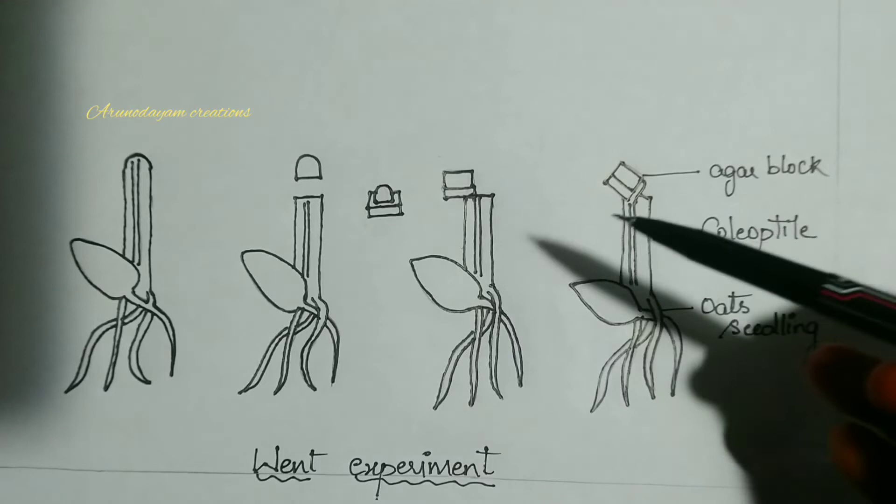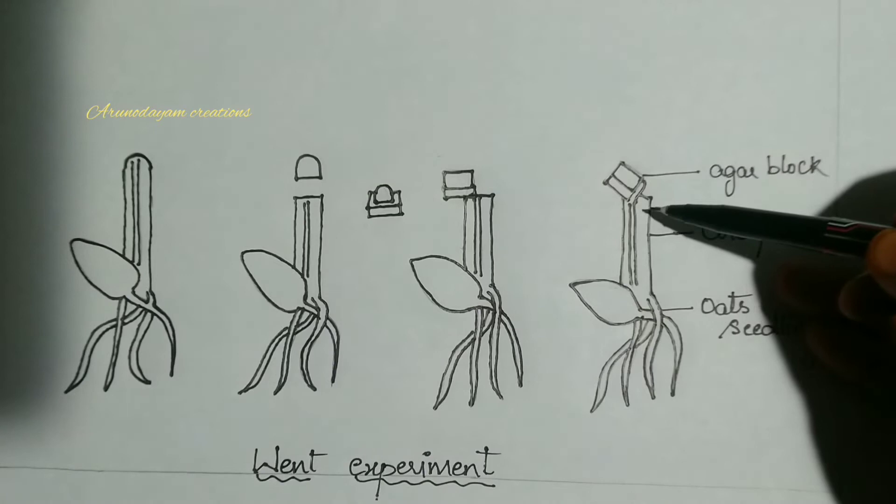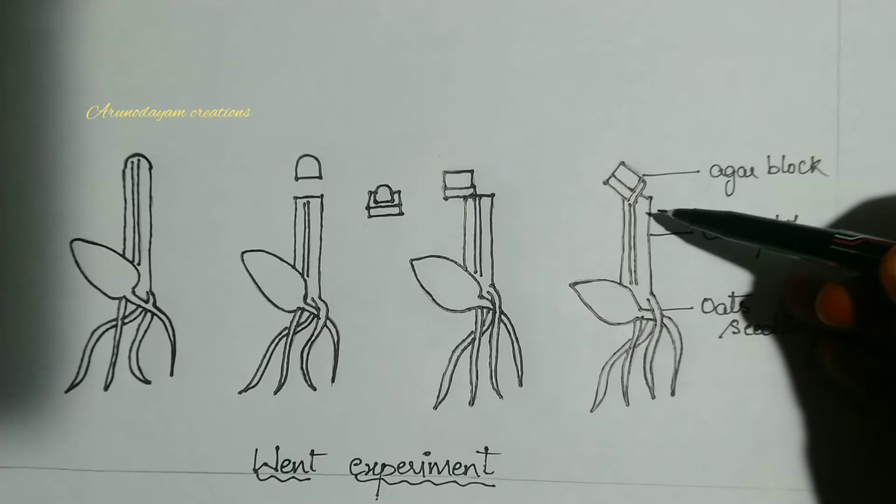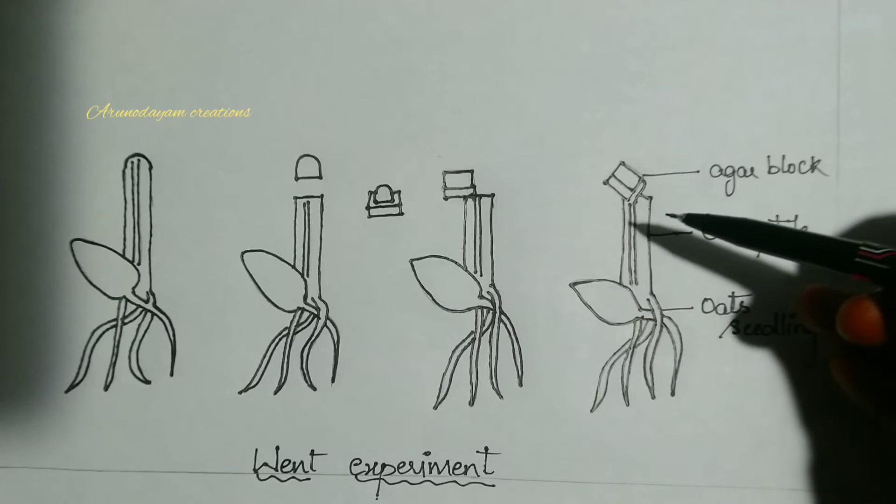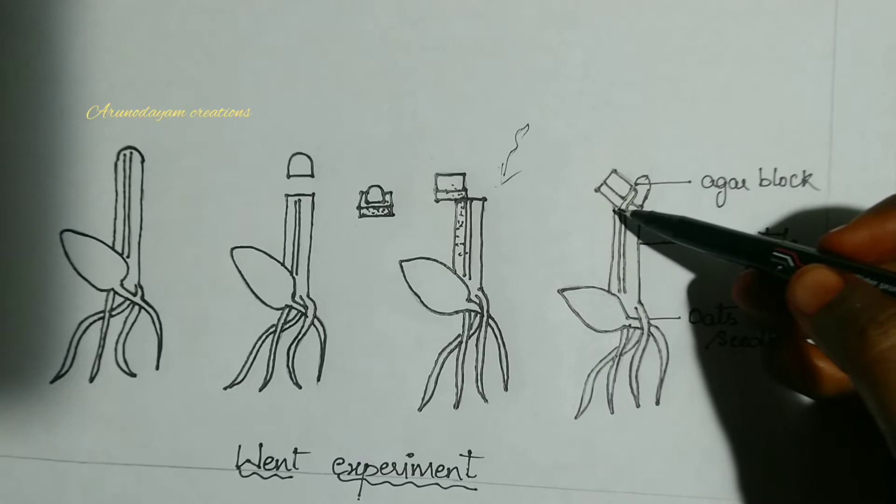After one hour, what he observed is the plant or coleoptile showed phototropism - it curved or bent towards light. The coleoptile bent away from the side on which the agar block was placed.